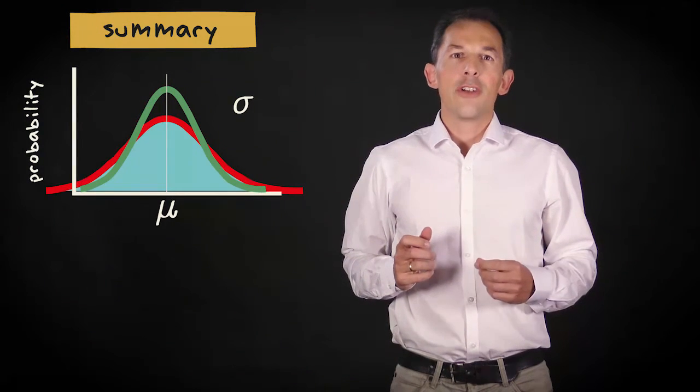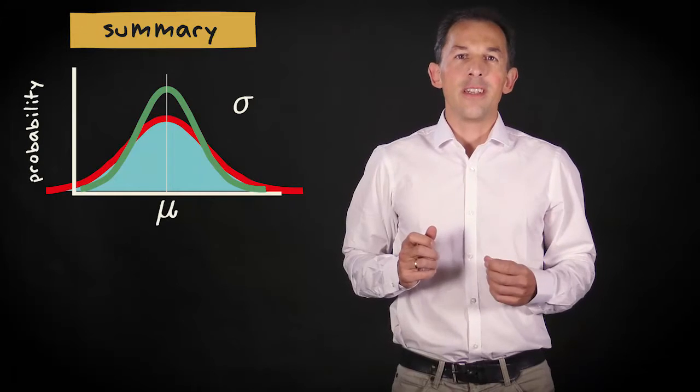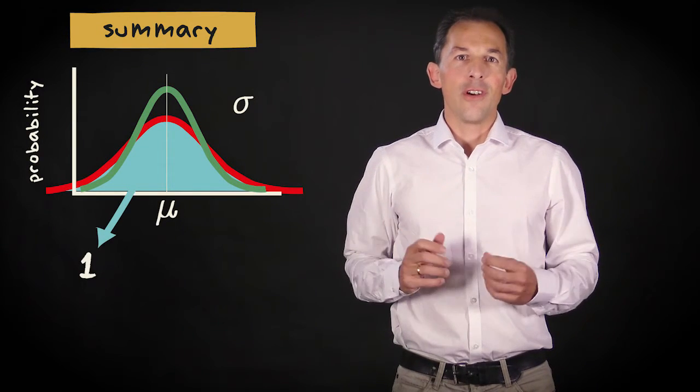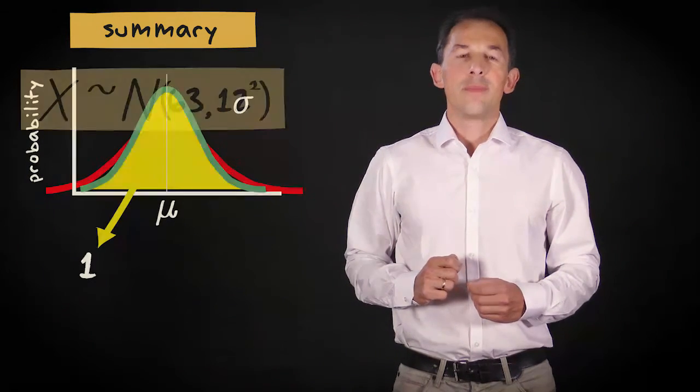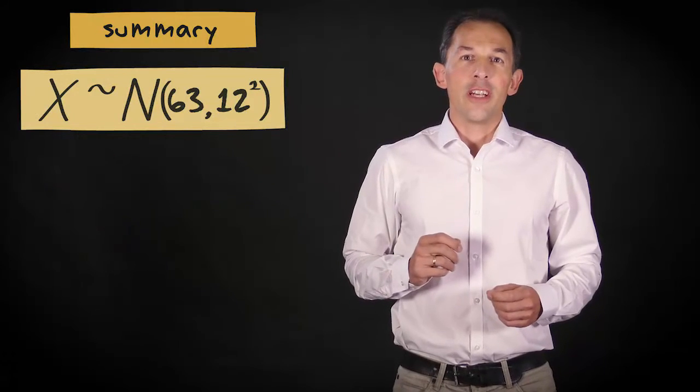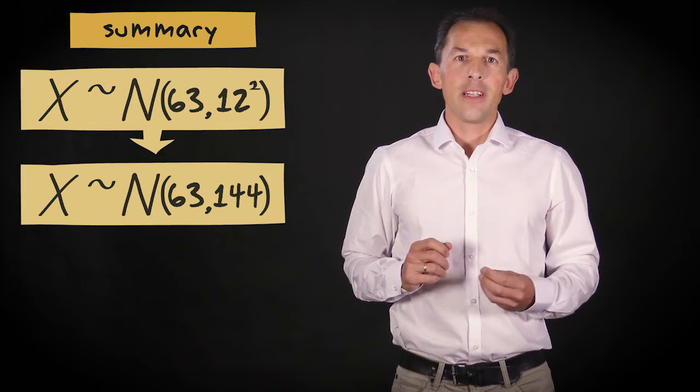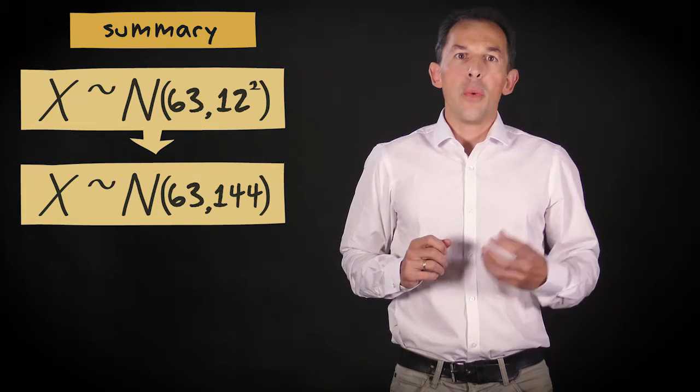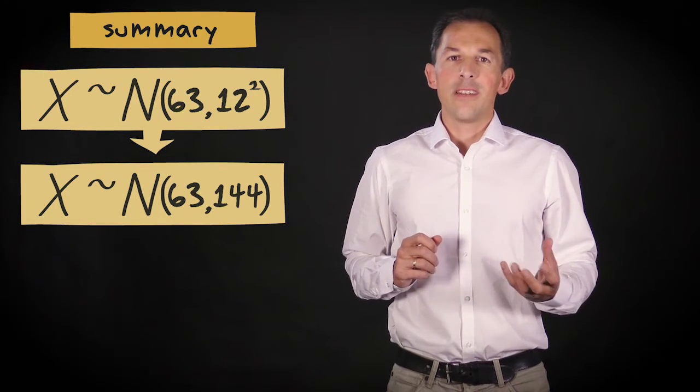The wider the curve, the lower its peak by necessity, because the surface under the curve always equals 1. This is the shorthand notation to state that a variable x is normally distributed with a mean of 63 and a standard deviation of 12.